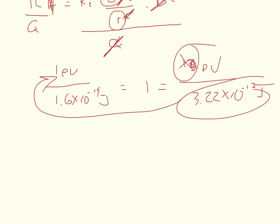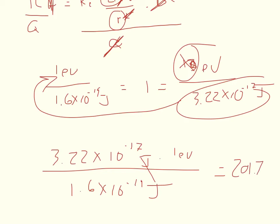So I'll go ahead and do that. So 3.22 times 10 to the negative 17th times a joules times one electron volt divided by 1.6 times 10 to the negative 19th joules. My joules cancel out, and whatever I'm left with is electron volts, and I get 201.708 electron volts.